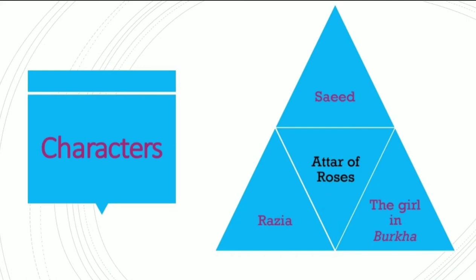A round character is deep and has a number of layers to it. These characters are interesting to audiences because they feel like real people. The audience often feel very much invested in such characters and feel involved in their successes, failures, strengths, and weaknesses. Flat characters, by comparison, are two-dimensional with very few distinguishing details. They are usually considered stock characters — they don't evolve and do not add to the story as much as a round character.